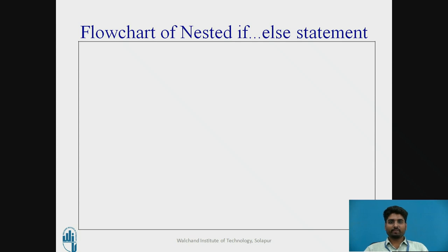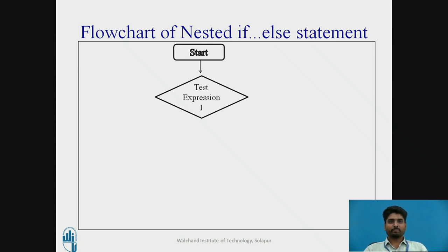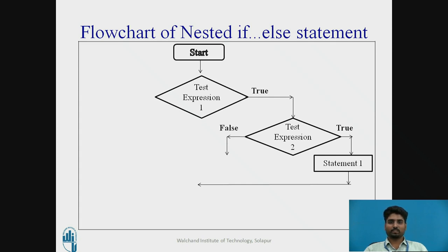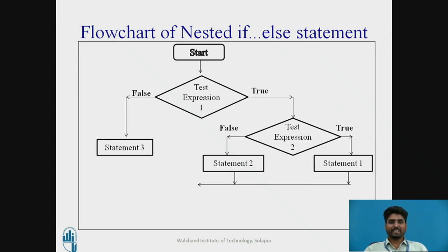The flowchart of the nested if-else statement is explained in detail. Starting, if test expression 1 is true, it goes to test expression 2. If test expression 2 is also true, then statement 1 is executed. If test expression 1 is true but test expression 2 is false, then statement 2 is executed. If test expression 1 itself is false, then statement 3 is executed, and then the program stops.